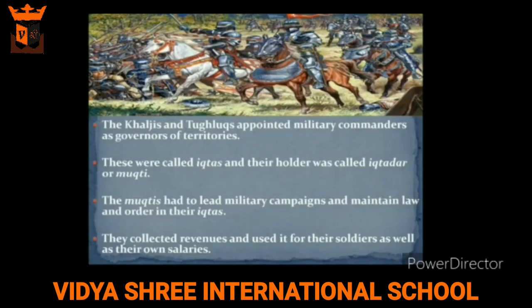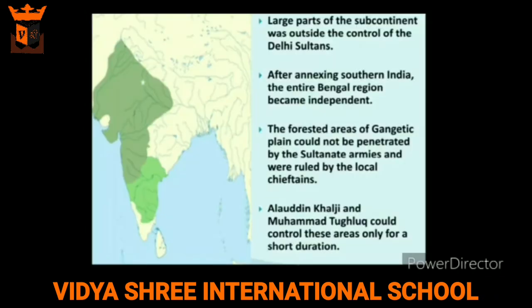The slaves and clients were loyal to their masters but not to their heirs. New sultans had their own servants, and this created conflicts between the old and the new nobility. Later, the Khiljis and Tughlaqs appointed military commanders as governors of territories called Iqtas, and their holders were called Iqtadars or Muqtis. The Muqtis had to lead military campaigns, maintain law and order in their Iqtas, and collected revenues to pay their soldiers and their own salaries.